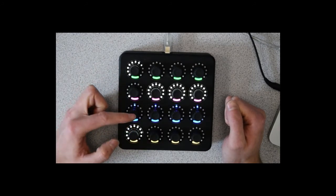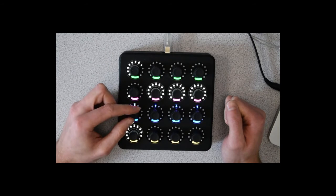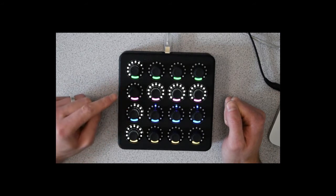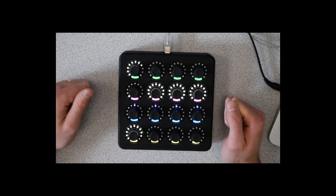And so the next encoder is just a pan function, which is quite nice, just a stereo pan. And to reset it to center, we can press the button there, which is quite nice.